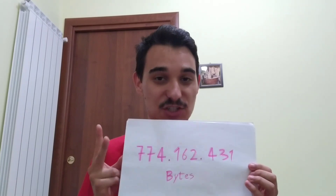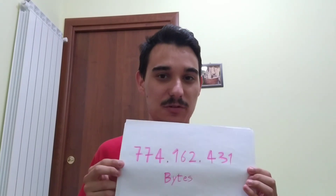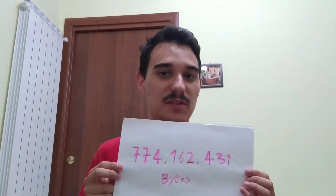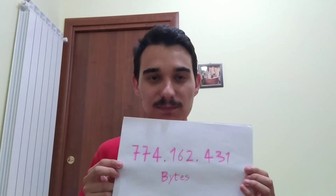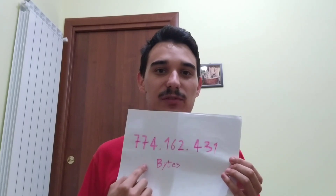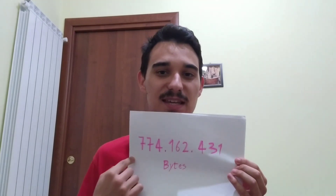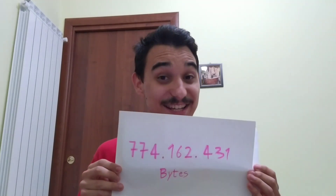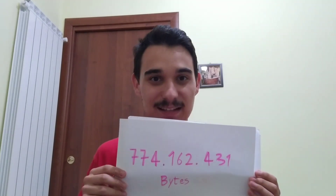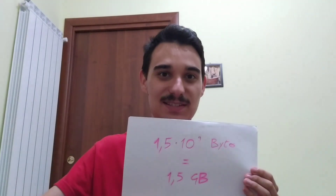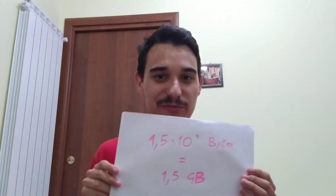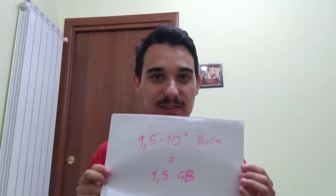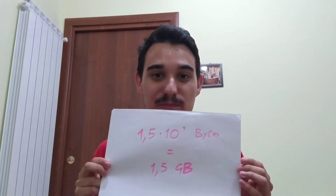Now, each cell has two sets of chromosomes — two copies of the genome. And if you double this quantity of information, you get that each cell carries 1.5 times 10 to the ninth bytes.